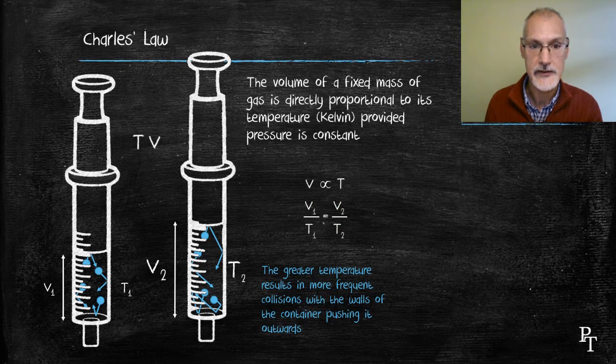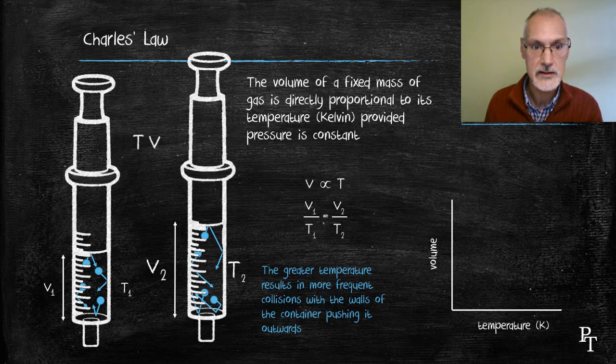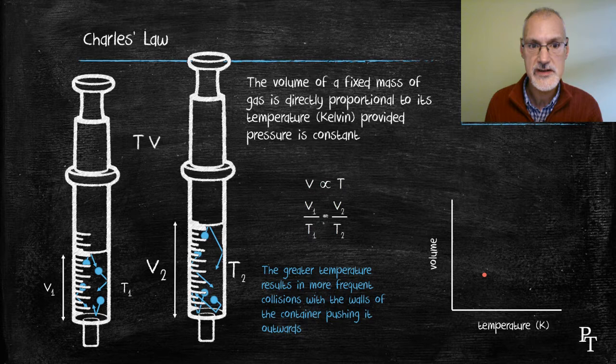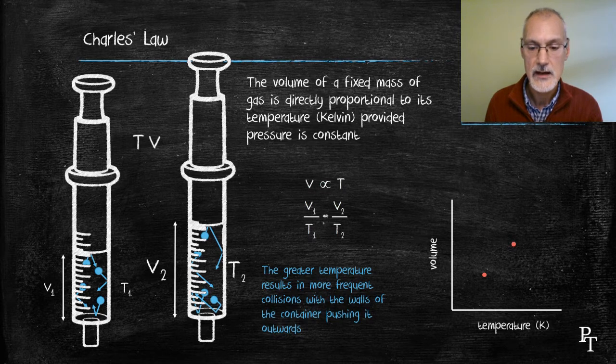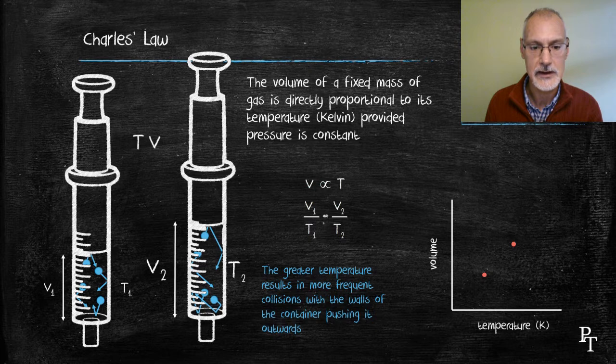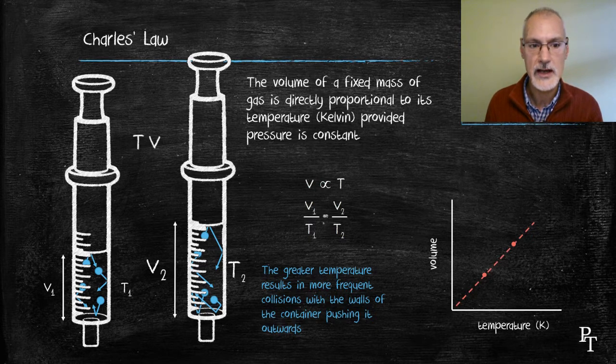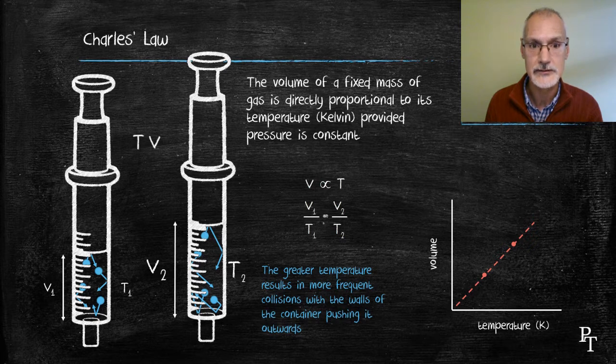Graphically, I'll place the information down here. There's my initial point of temperature and volume. I'm going to increase the temperature. It will also result in an increase in my volume, and that will give the following straight line. So Charles' law says that a fixed mass of gas is directly proportional to its temperature in Kelvin.